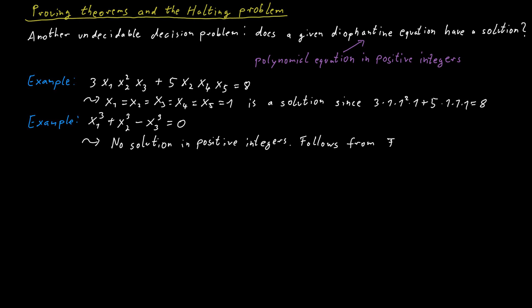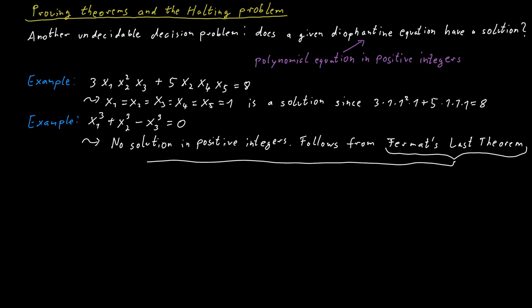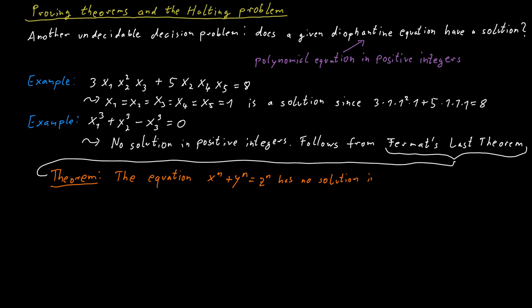But this is not obvious. It is, however, a consequence of Fermat's Last Theorem. Fermat's Last Theorem states that the equation x^n + y^n = z^n has no solution in positive integers for any integer n at least 3. So x1³ + x2³ - x3³ = 0 is a special case of this theorem where n equals 3.